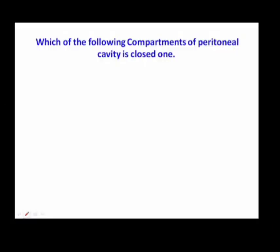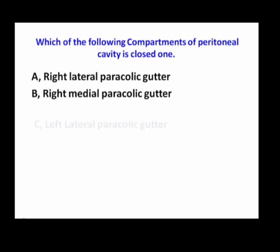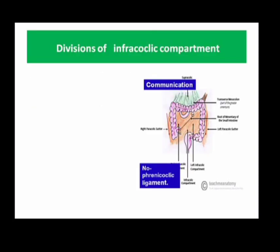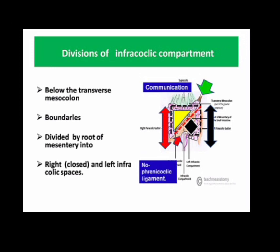Which of the following compartments of the peritoneal cavity is a closed one? Right lateral paracolic gutter, right medial paracolic gutter, left lateral paracolic gutter, or right lateral paracolic gutter. B — right medial paracolic gutter — is the correct option.